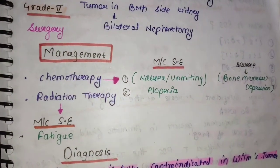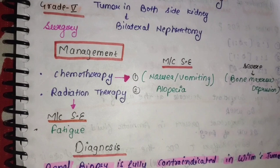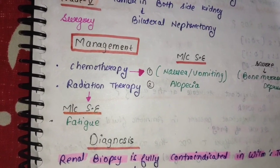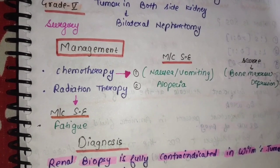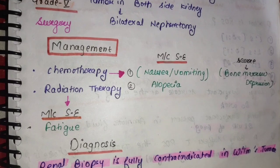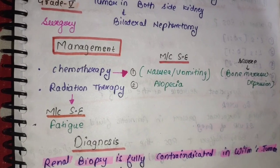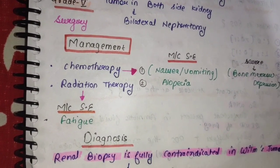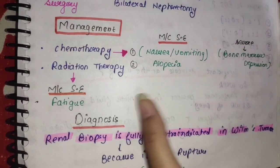Management: इसमें chemotherapy perform की जाती है. Chemotherapy के अंदर कुछ anti-neoplastic drugs होती हैं जिनका use cancer को treat करने के लिए किया जाता है. ये abnormal cancer cells की growth को suppress करने में help करती हैं. Next, radiation therapy — इसमें highly ionized radiations का use किया जाता है tumor वाले area पर, जो abnormal cells होते हैं उनकी abnormal division को रोका जाता है इस therapy से.